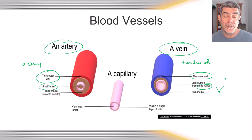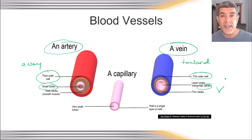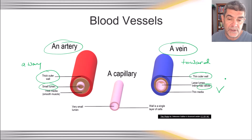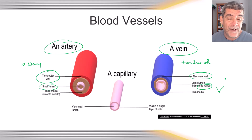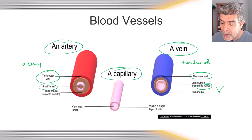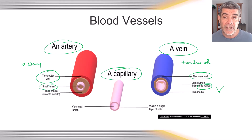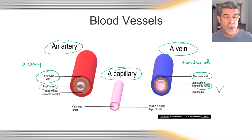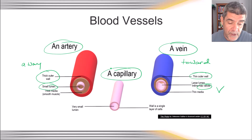The lumen of veins is slightly larger — because the walls aren't as thick as arteries, there's more space inside the tube. At the macro level, we can't really see capillaries; they're just too small and require a microscope. Capillaries are a single layer of cells and help facilitate gas exchange, which we'll look at later. They're not really a structure we can observe at the macroscopic level.